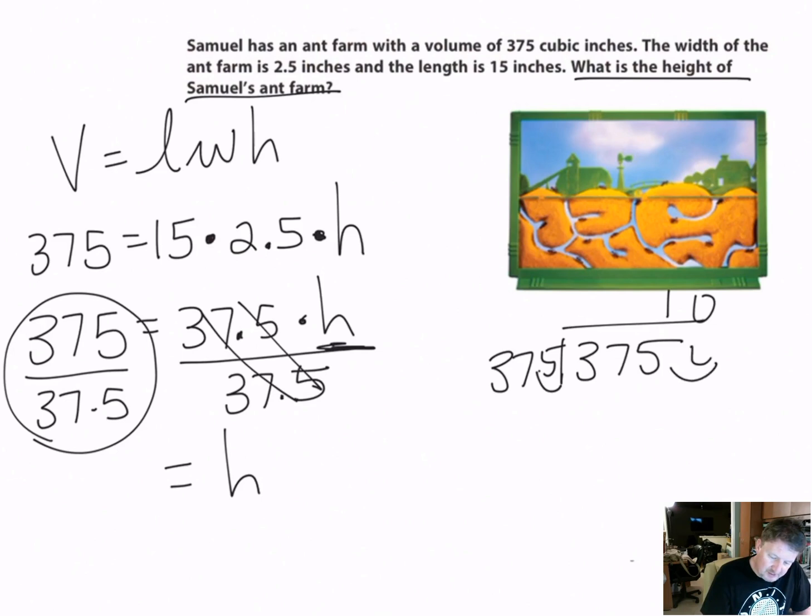I'll give you a hint, it's 10. We move the decimal - 375 goes into 375 one time, then it won't go into zero, so we wind up with 10. The height on this ant farm is 10 inches tall. That's all there is to it.